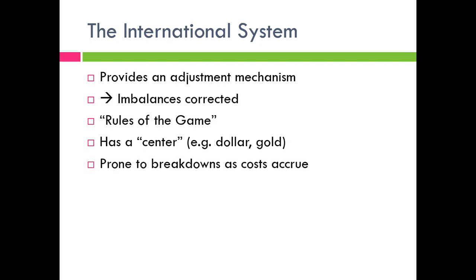Other countries work around the center and can link to gold or link to the dollar. But costs can accrue to that center, especially if gold starts leaving the country or if the dollar faces pressure, as in the 1970s. So the system can break down, and a lot of times the history of the system ends with an old system ending and a new system beginning. The country at the center pays higher costs.